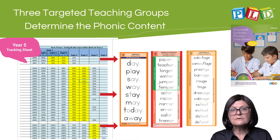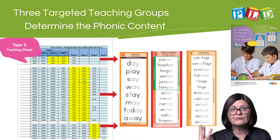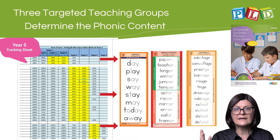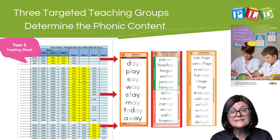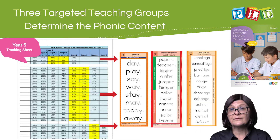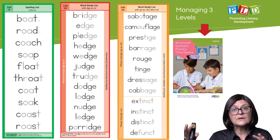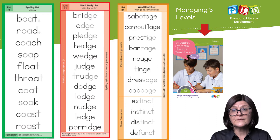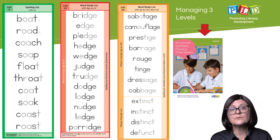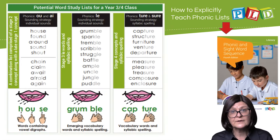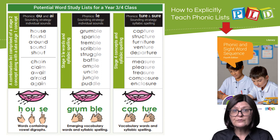PLD will recommend three targeted teaching groups — not six, but three. And whether those words are drawn from the Time Savers books or the Phonic Sight Word Sequence, but three levels.